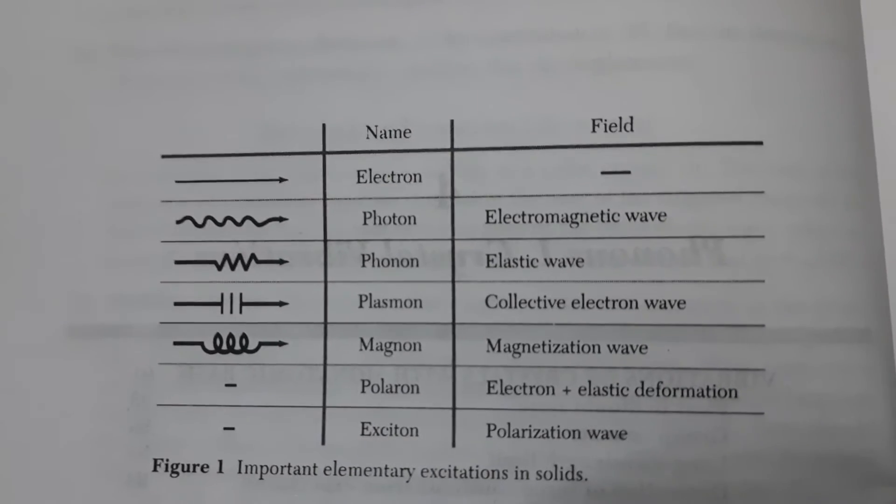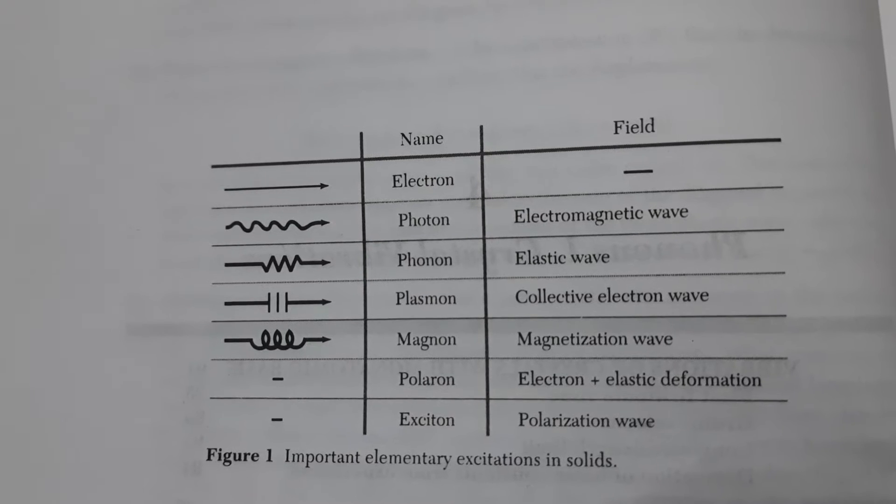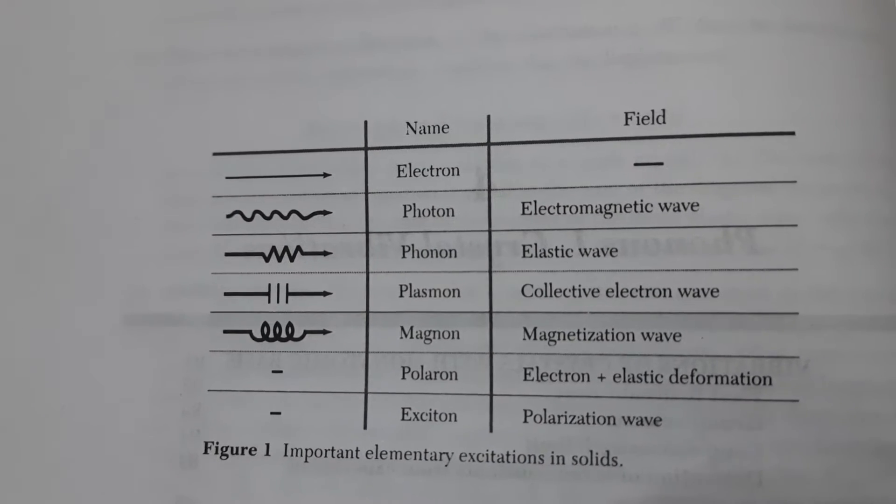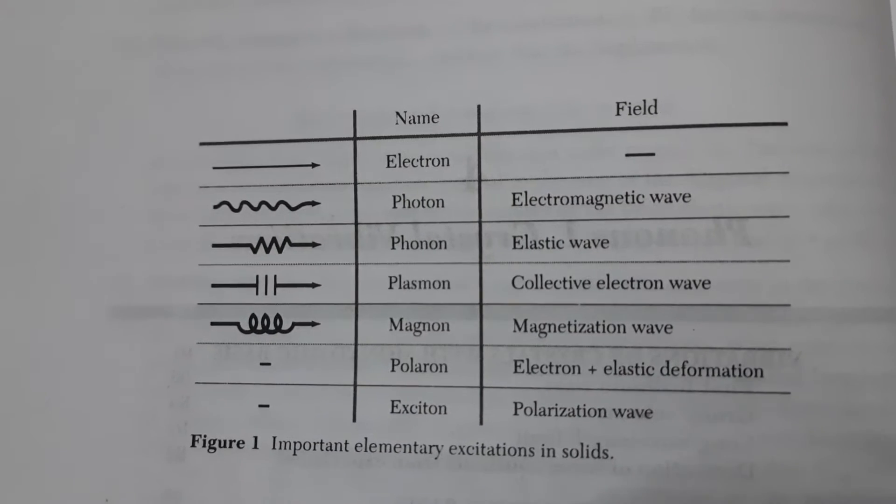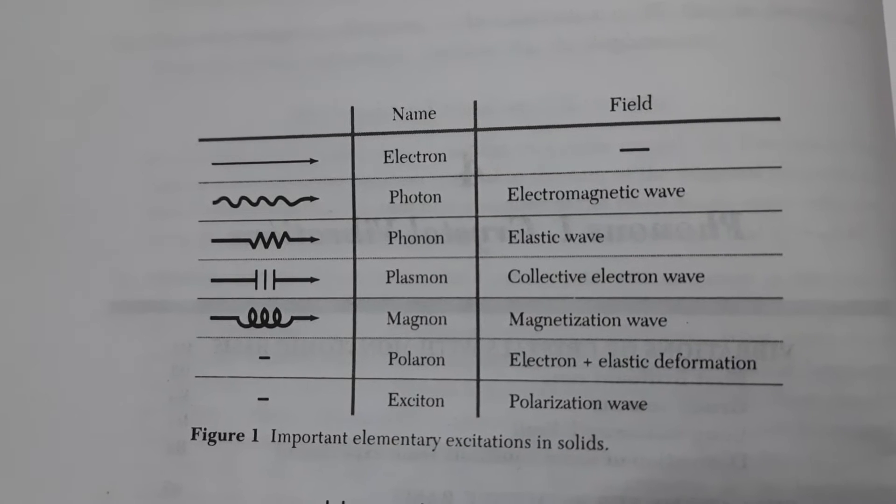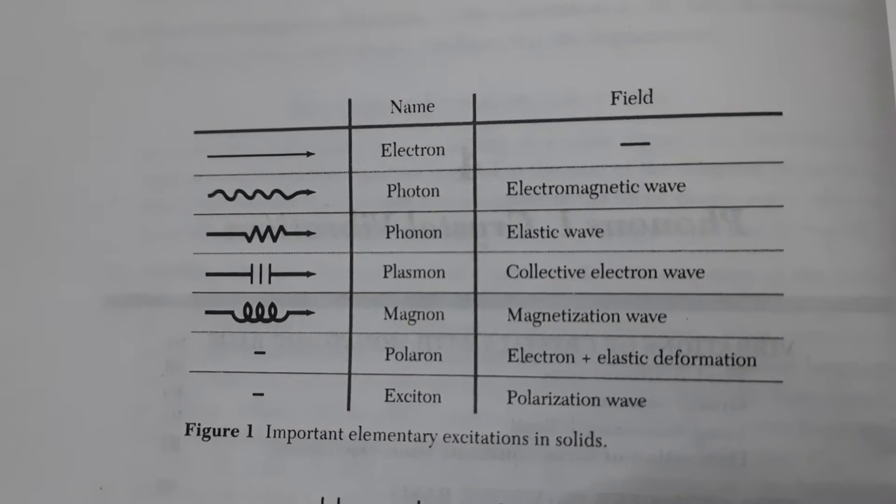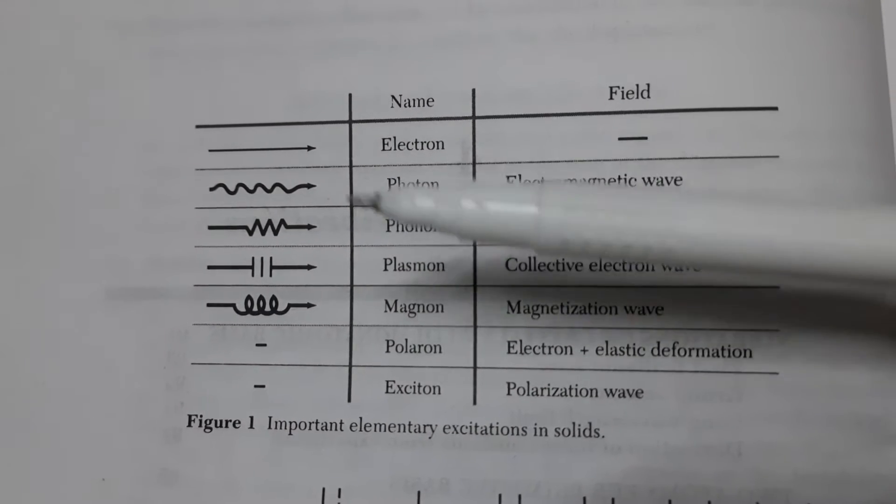All the elementary excitations that can explain the possible phenomena we see in condensed matter systems are listed here. The first one is electron, an elementary particle denoted with an arrow.